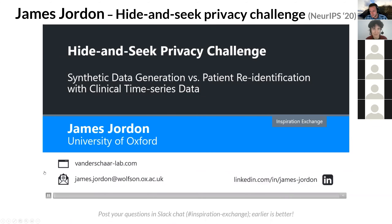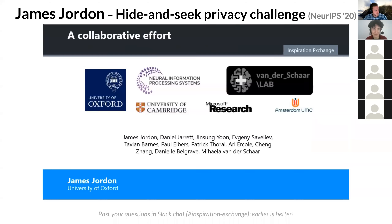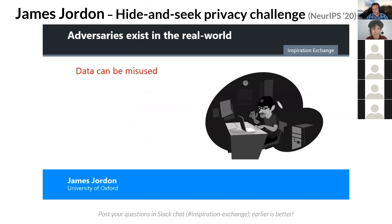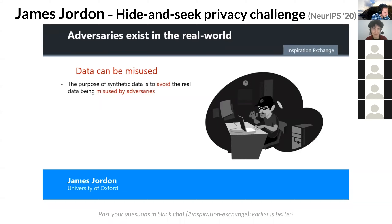Hello, I'm James Jordan. I'm going to talk about our NeurIPS 2020 Hide and Seek Privacy Challenge. This competition wouldn't have been possible without the great support from our collaborators — Amsterdam UMC kindly providing high quality data, and Microsoft Research providing compute and prizes. Adversaries exist in the real world — this is precisely why synthetic data, privacy, and security all exist. The first thing to note is that data can be misused. The purpose of synthetic data is to avoid the real data being misused by adversaries. By releasing synthetic data, we can hope the real data is not breached and that the privacy of individuals is maintained.